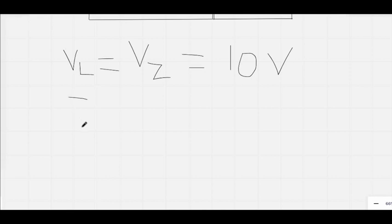Let's calculate IL now. IL would be, simply apply Ohm's law, IL would be voltage upon resistor. So this is 10 upon 3k. We all know the value, it is 3.3 milliampere.